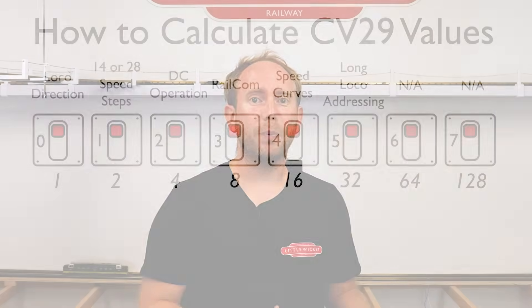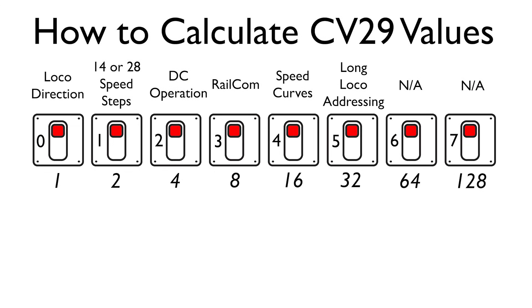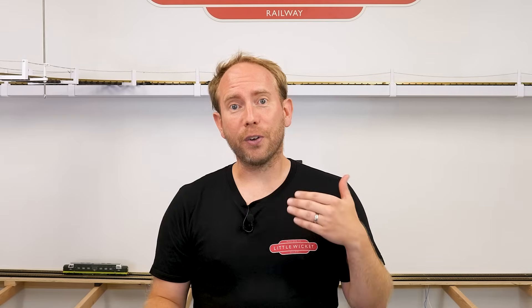CV29 can hold a value from 0 to 255, but how do we know what value to write? Each bit or switch has a value associated with it: 1, 2, 4, 8, 16, 32, 64, and 128. If we turn on a switch, we add that number to the CV value.